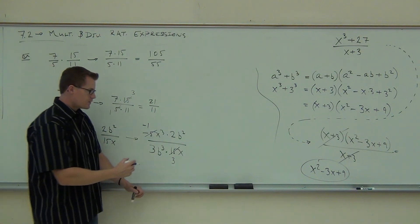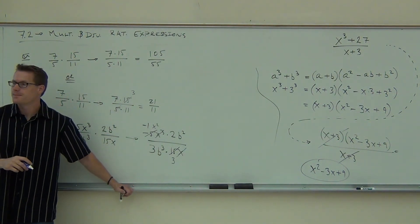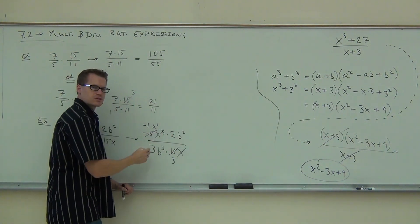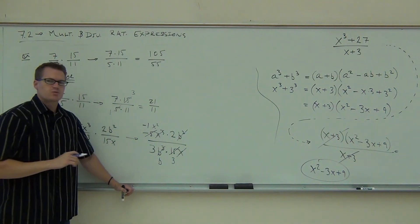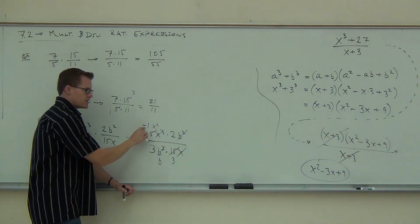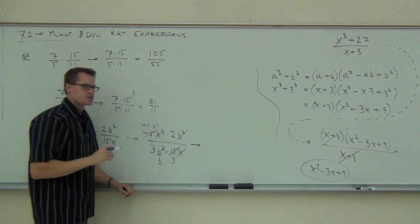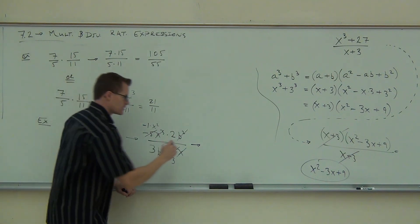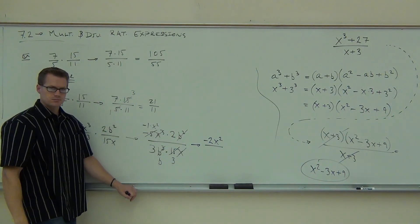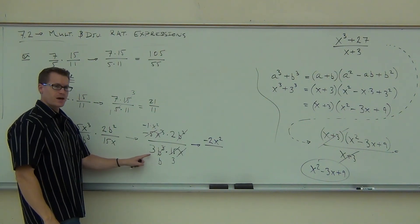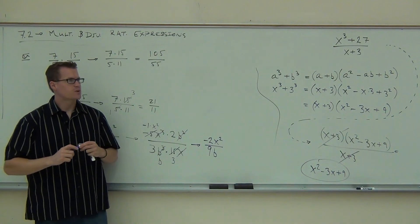The x — this x is completely gone, and this x becomes x squared. The b squared and the b cubed: b squared is gone and b cubed becomes b. So we have a negative, an x squared, and a 2 — don't forget about that 2, you didn't cross it out. On the numerator we get negative 2x squared. On the denominator, we have 3 times 3, which is 9, and then the b — giving us 9b. That's our final answer: negative 2x squared over 9b.